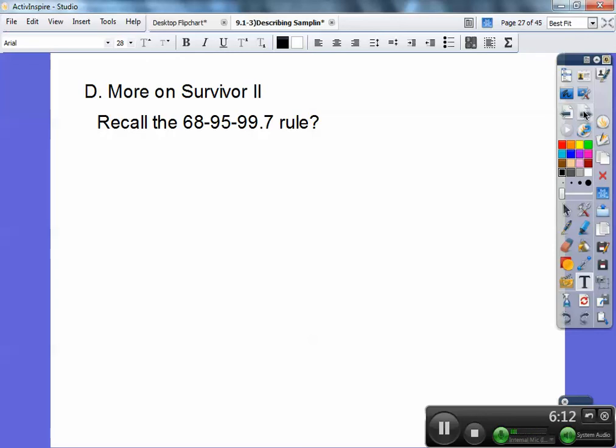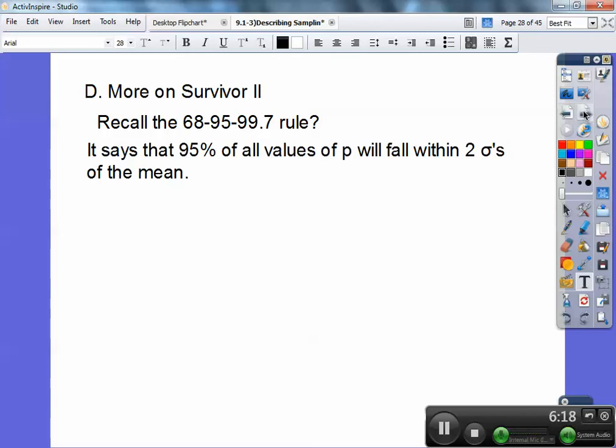More on Survivor 2. Recall the 68-95-99.7 rule. Probably not. It says that 95% of all values of P will fall within two standard deviations of the mean. Remember, 68% is one standard deviation of the mean, 95% is two standard deviations of the mean, and 99.7% is three standard deviations of the mean.